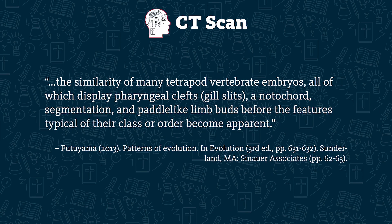Instead of touting Haeckel's false claim that whole embryos reenact evolution, my textbook simply taught that similarities between embryos are evidence of evolution, or that parts of developing embryos reflect their supposed evolutionary history. For example, my evolution textbook talked about the similarity of many tetrapod vertebrate embryos, all of which display pharyngeal clefts or gill slits, a notochord — that's a rod of something like cartilage which becomes the backbone in vertebrates — segmentation, and paddle-like limb buds before the features typical of their class or order become apparent.